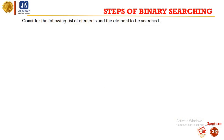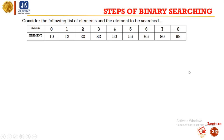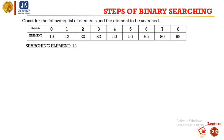We will consider the following list of elements and the element to be searched. As you can see, all the elements are in sorted form: 10, 12, 20, 32, 50, 55, 65, 80, 99 — these are the index values at positions 0 through 8. Here 0 is the low and 8 is the high. The searching element is 12.